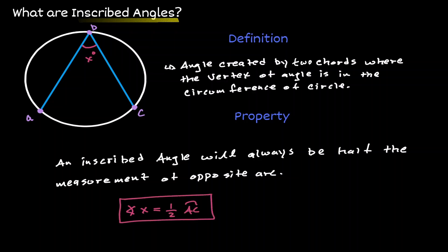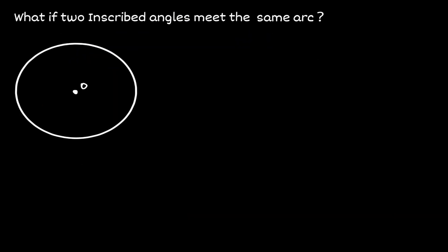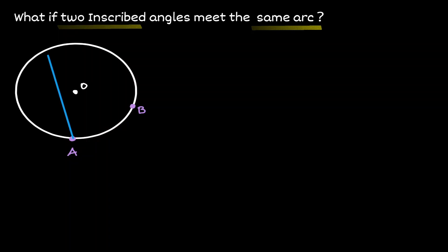Let's look at some scenarios with inscribed angles. What occurs when two inscribed angles meet the same arc? Let's define an arc — let's call it AB. Now let's define an inscribed angle that intersects at points A and B, and let's call this angle X. We know that angle X is equal to half of the opposite arc, which in this case is AB.